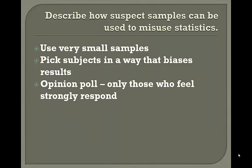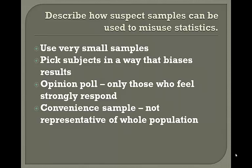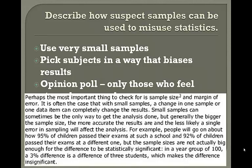Opinion polls: if you send an opinion out, sometimes only those who feel strongly respond — people who could go either way don't respond. Convenience samples are not representative of the whole population. Perhaps the most important thing to check is sample size and margin of error. With small samples, a change in one data item can completely change the results. Generally, the bigger the sample size, the more accurate the results and the less likely a single sampling error will affect the analysis.